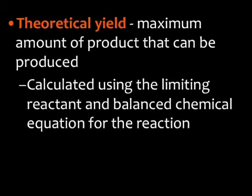So the first concept we need to talk about is theoretical yield. Theoretical yield is the maximum amount of product that can be produced in a reaction. So to calculate the theoretical yield, you use the limiting reactant, which means the reactant that runs out first, and the balanced chemical equation for the reaction.